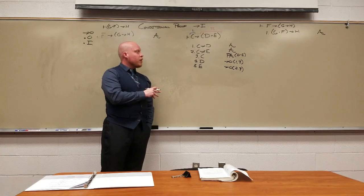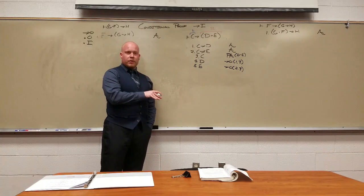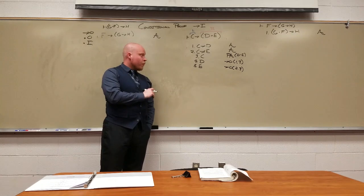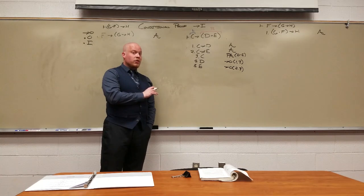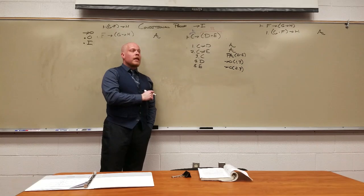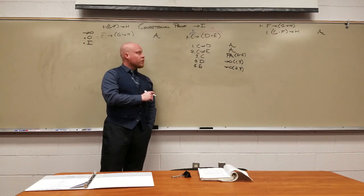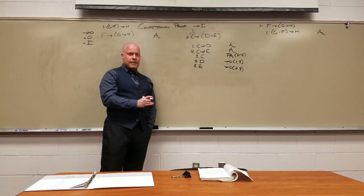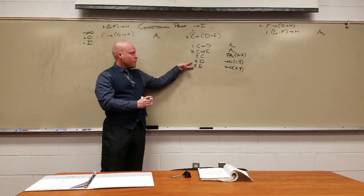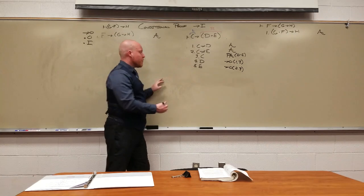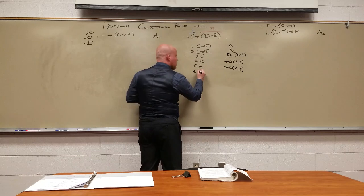Now, can we do another arrow out? Nope, we've exhausted all our options. Can we do an and out? There are no ands, there are no conjunctions to break apart. There's no dots to split in half. Can and should we do an and in? What are we trying to get right now? D and E.